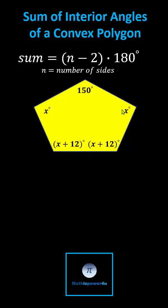Two of the interior angles measure x degrees and two of the angles measure the quantity x plus 12 degrees. This gives us the equation two times x plus two times the quantity x plus 12 plus 150 equals the quantity five minus two times 180.